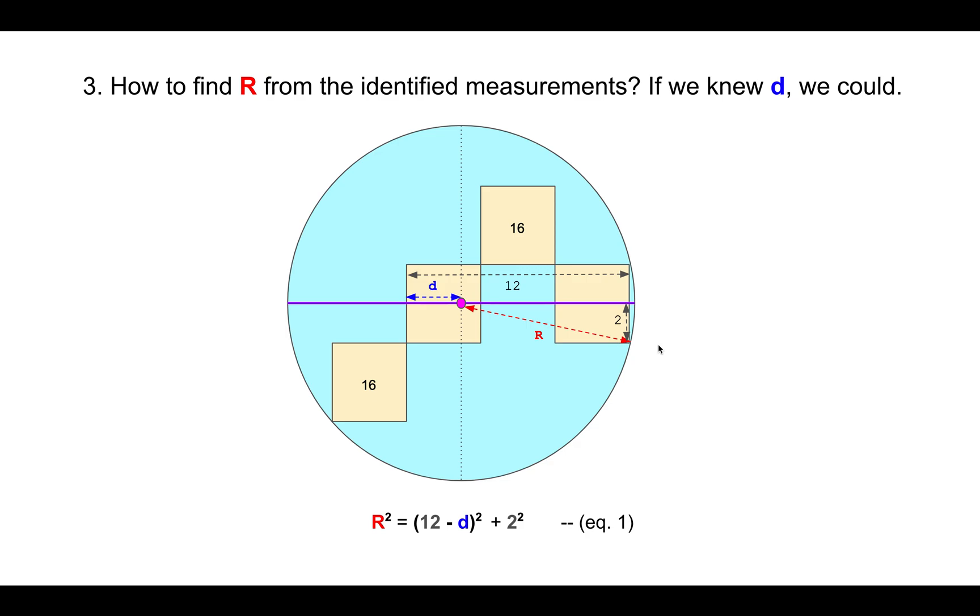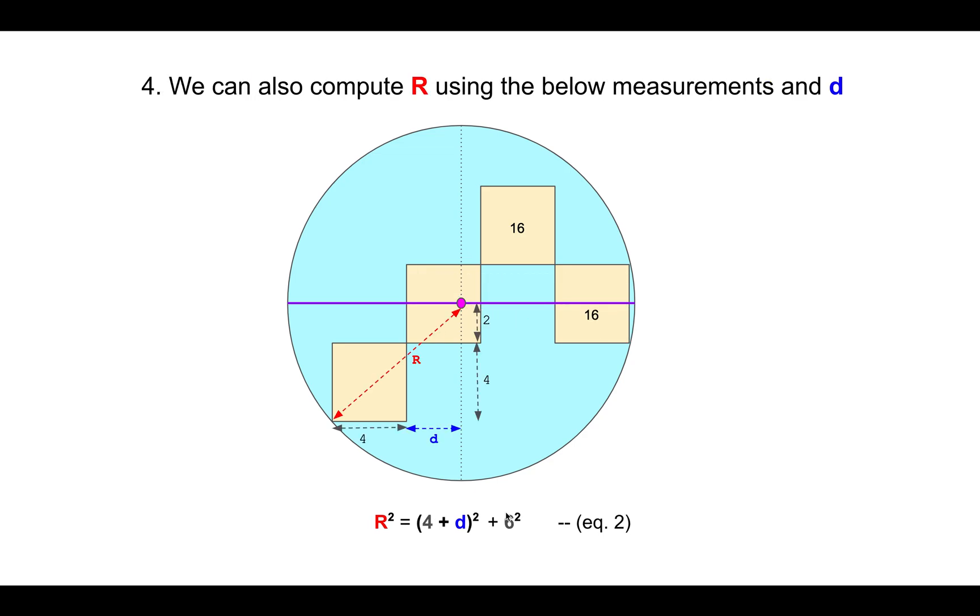Got it? Okay, great. Let's move on. But this only has one piece of information and we don't know d yet. So what can we do? Well, let's look at the other set of measurements. Can we use it in some way?